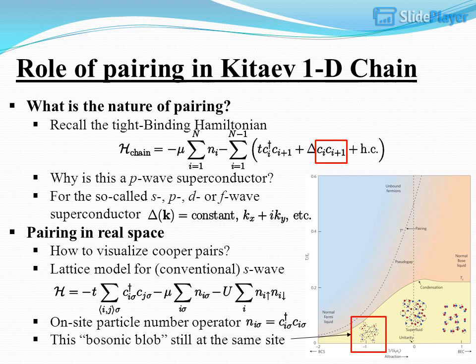What is the nature of pairing? Recalling the tight-binding Hamiltonian: why is this a P-wave superconductor? For the so-called S, P, D, or F-wave superconductors, pairing in real space is examined. How to visualize Cooper pairs: in the lattice model, conventional S-wave pairing involves on-site particle-number operators — this bosonic blob remains at the same site.